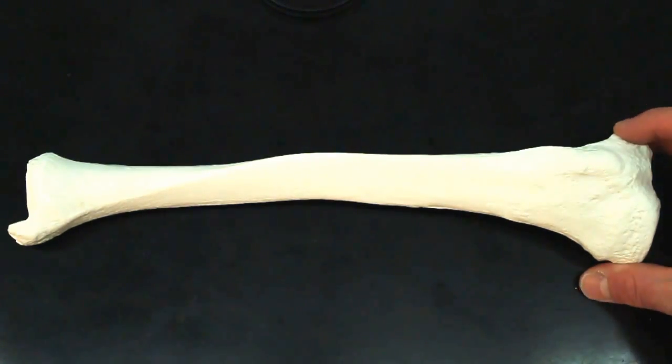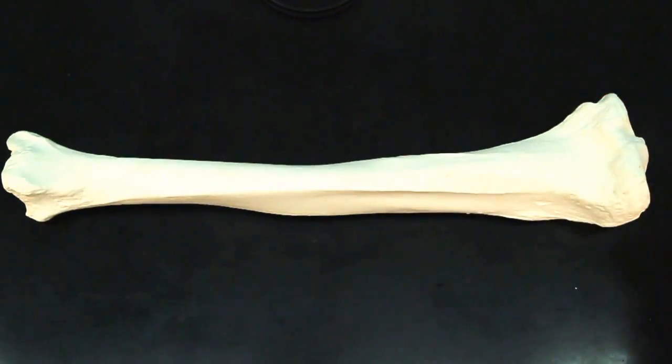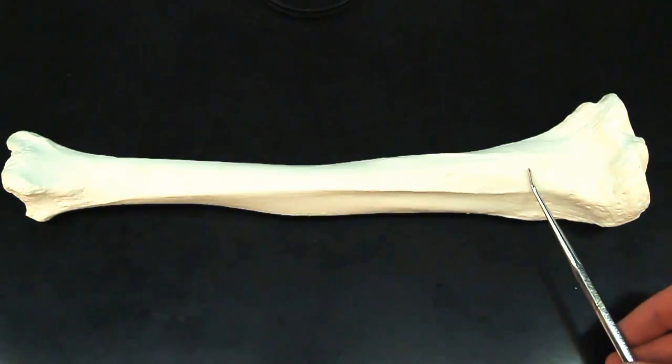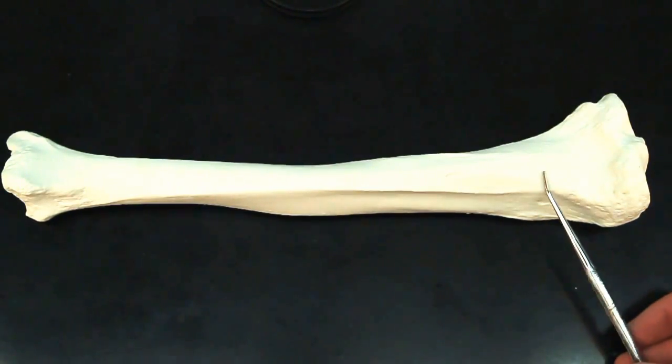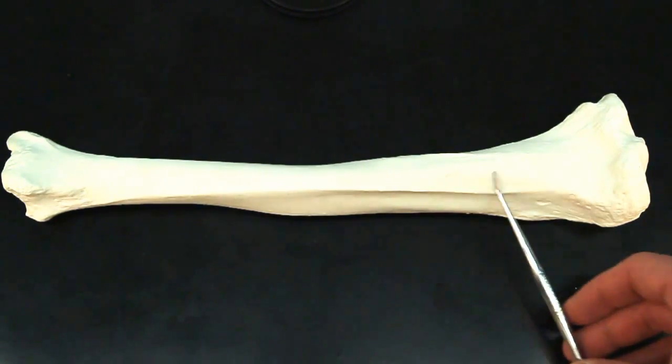If we turn over to the posterior side, we're going to have a sharp contrast of a line here. This sharp contrast is going to be the line for soleus.